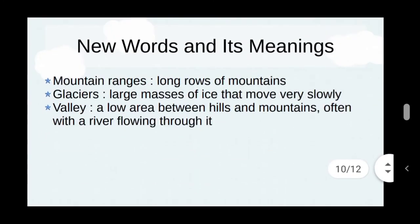New words and their meanings: Mountain ranges — long rows of mountains. Glaciers — large masses of ice that move very slowly. Valley — a low area between hills or mountains, often with a river flowing through it.